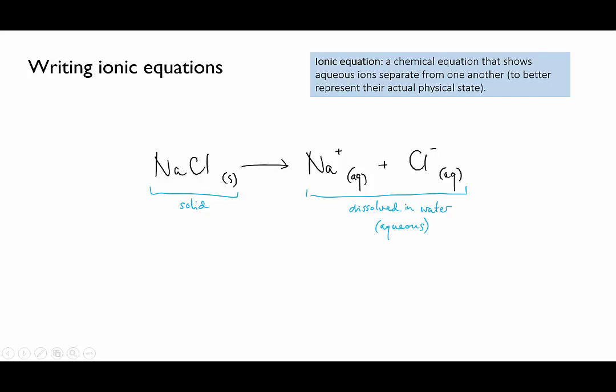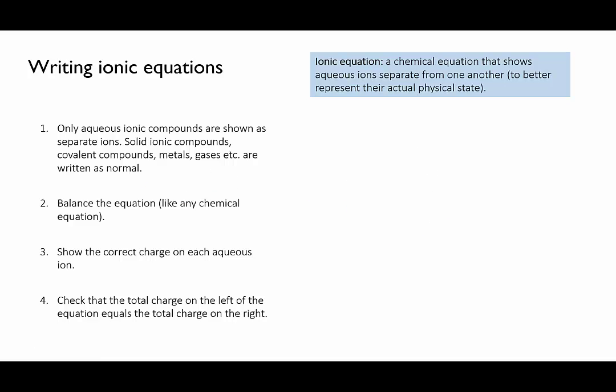When you're writing ionic equations there are a couple of things to remember. I'll run through them using magnesium bromide as an example. First, only substances that have separated into ions when they dissolved in water are written as separate ions. All other compounds are written as normal.